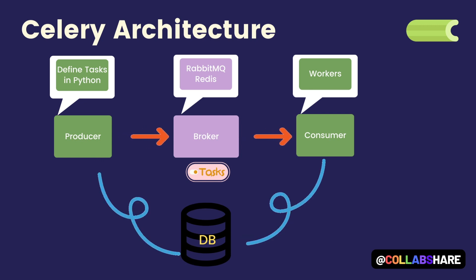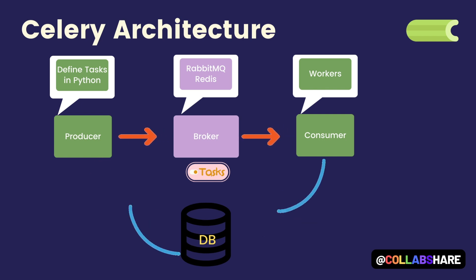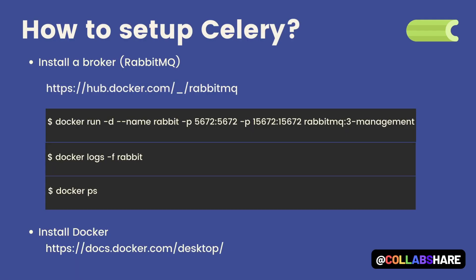Now that we have a basic understanding of how Celery works, let's implement a simple example. To do so we need to install a message broker — we will use RabbitMQ as our broker. If you haven't installed Docker on your platform, please go to the provided link and install Docker for your operating system. You can also install RabbitMQ directly on your OS without Docker, but using Docker is preferred for this kind of task.